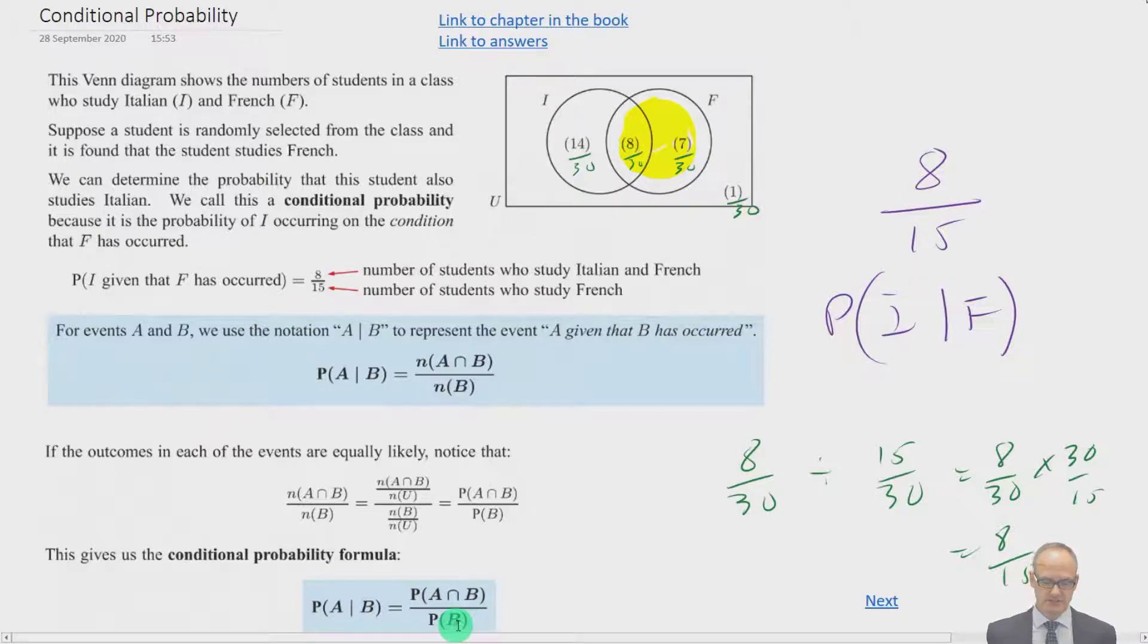So let's just recap. Conditional probability, this formula means the probability of A given that B has already happened. And it is equal to the probability that they both happened, i.e. the intersection, divided by the probability of B, the thing that's already happened.